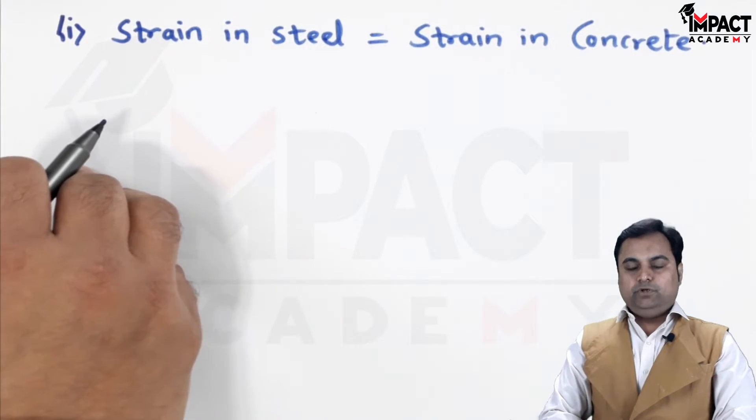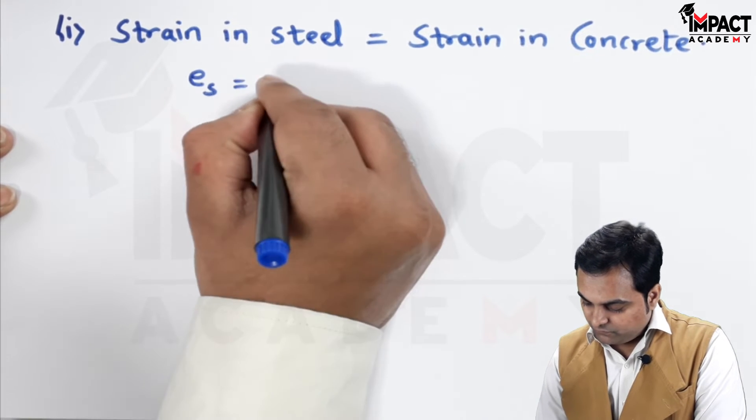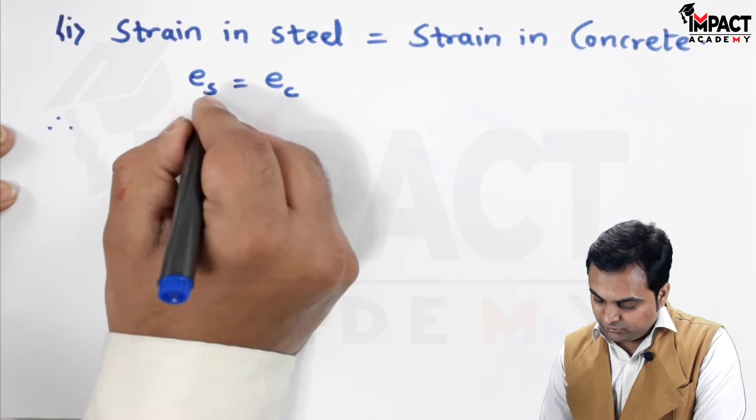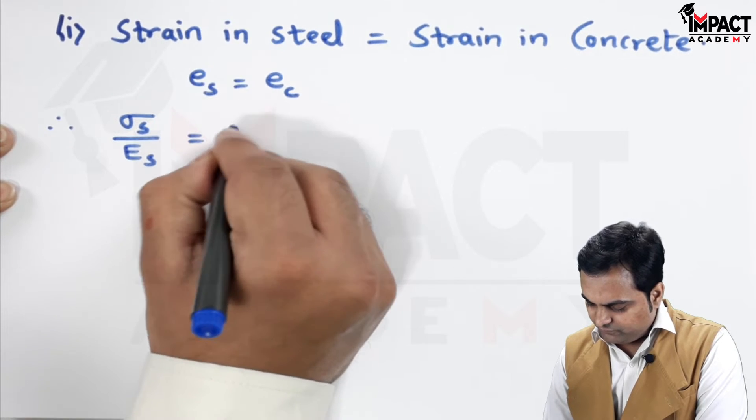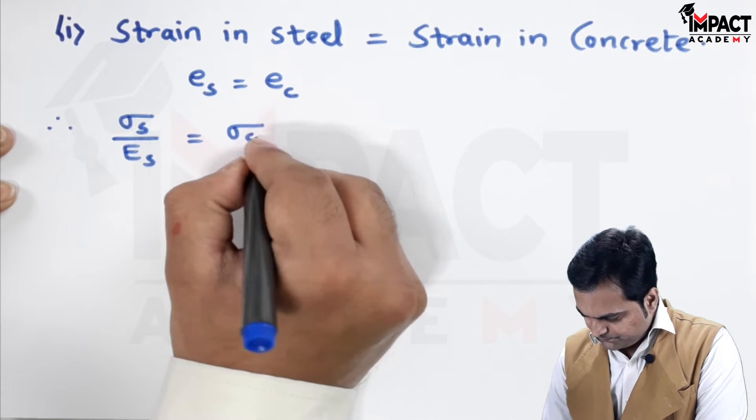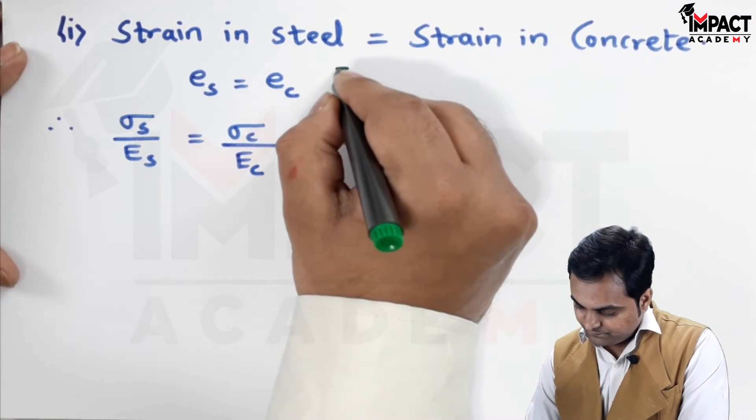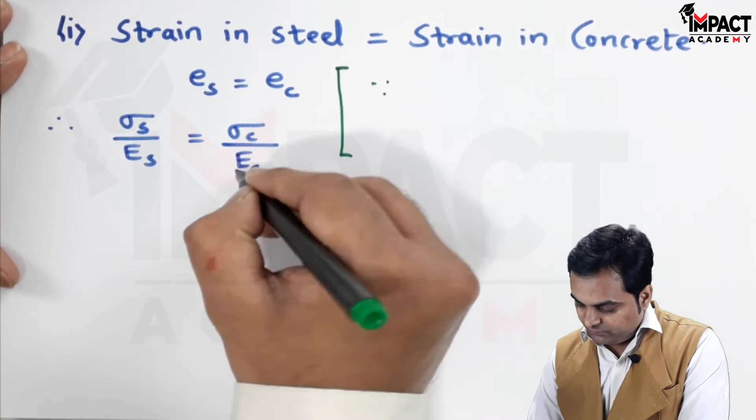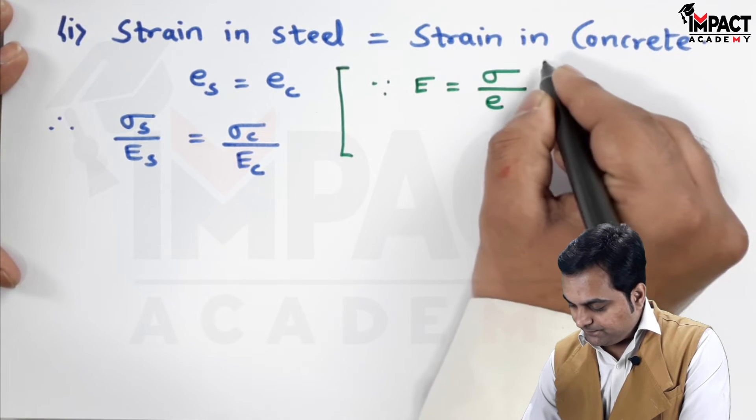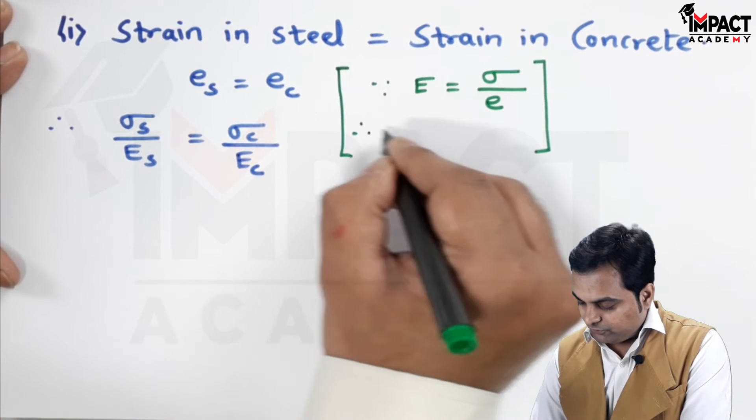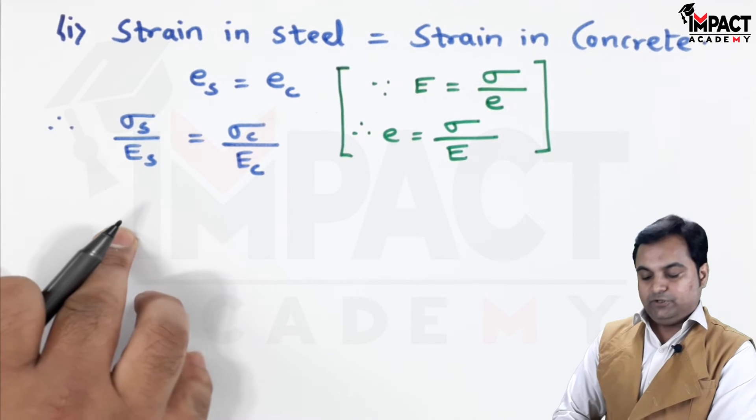Strain in steel is equal to the strain in concrete. Strain in steel is denoted by E suffix S, for concrete E suffix C. Therefore, strain is stress upon Young's modulus for steel and similarly for concrete. And, this formula comes from Hooke's law, where we have Young's modulus as stress upon strain. So, therefore, strain is stress upon Young's modulus. That's why I use this formula.